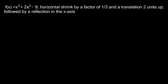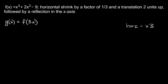Alright, here we have f of x is equal to x cubed plus two x squared minus nine. The first transformation is a horizontal shrink by a factor of one third. A horizontal shrink by a factor of one third doesn't mean we're going to multiply by one third — we're going to multiply by the reciprocal, which is three. And remember, we're not going to multiply the whole function by three, only the x's. So g of x is equal to f of three x.